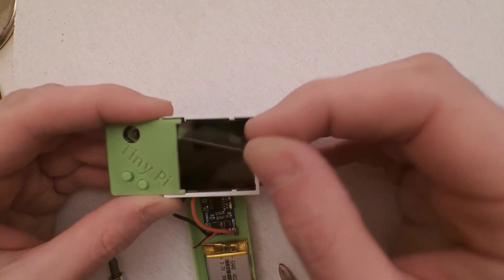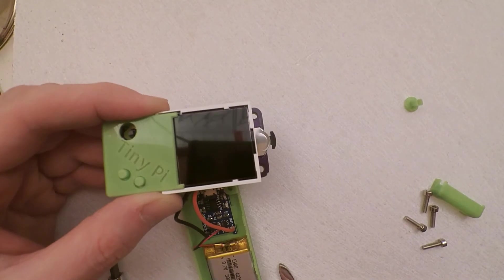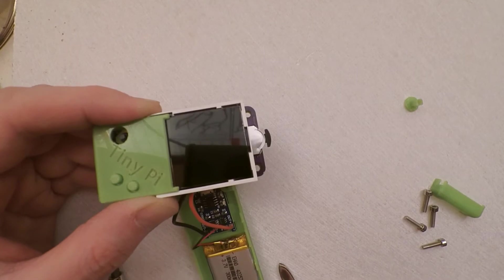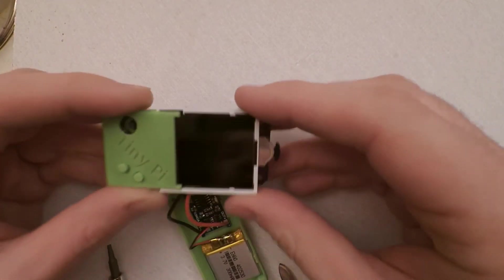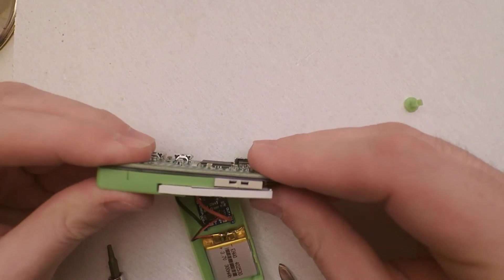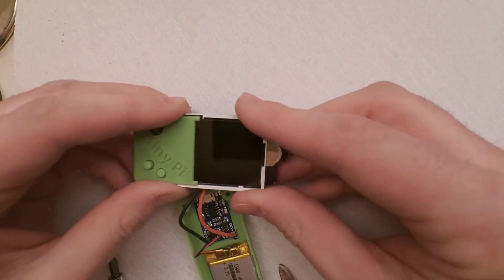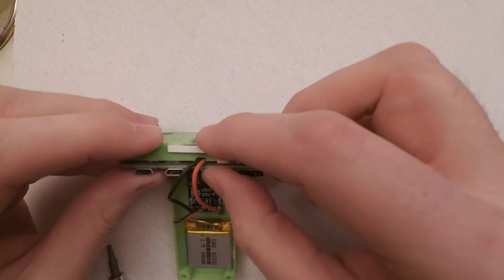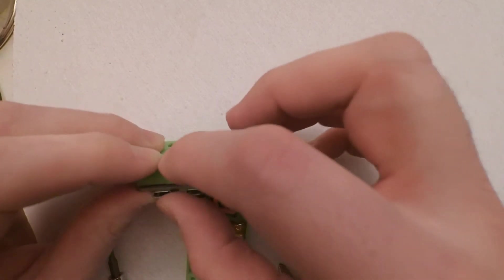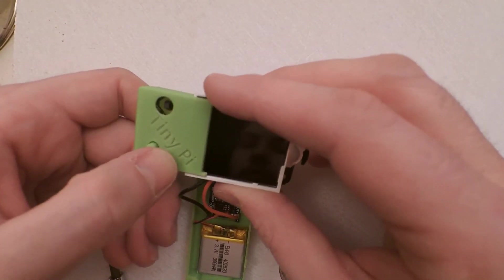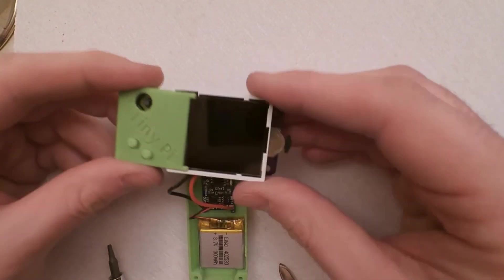At this point you can take the screen protector off, but I like to save those so I can put them back on later. So that's the bottom half in place. It's a little bit fiddly but just take it steady and it'll be okay. And just check you can feel the buttons working and they're okay.